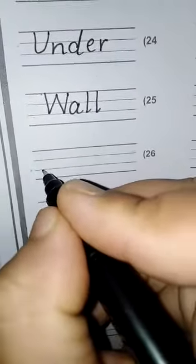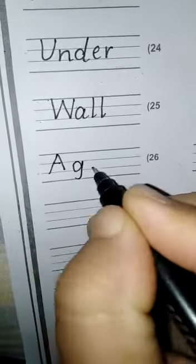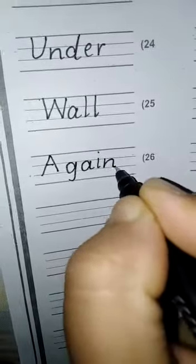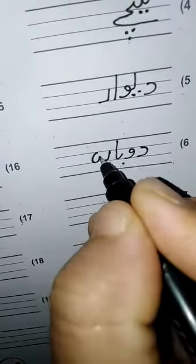A-G-A-I-N, again. Again mean dobara. Dal wao du, ba liwa, re hera, dobara.